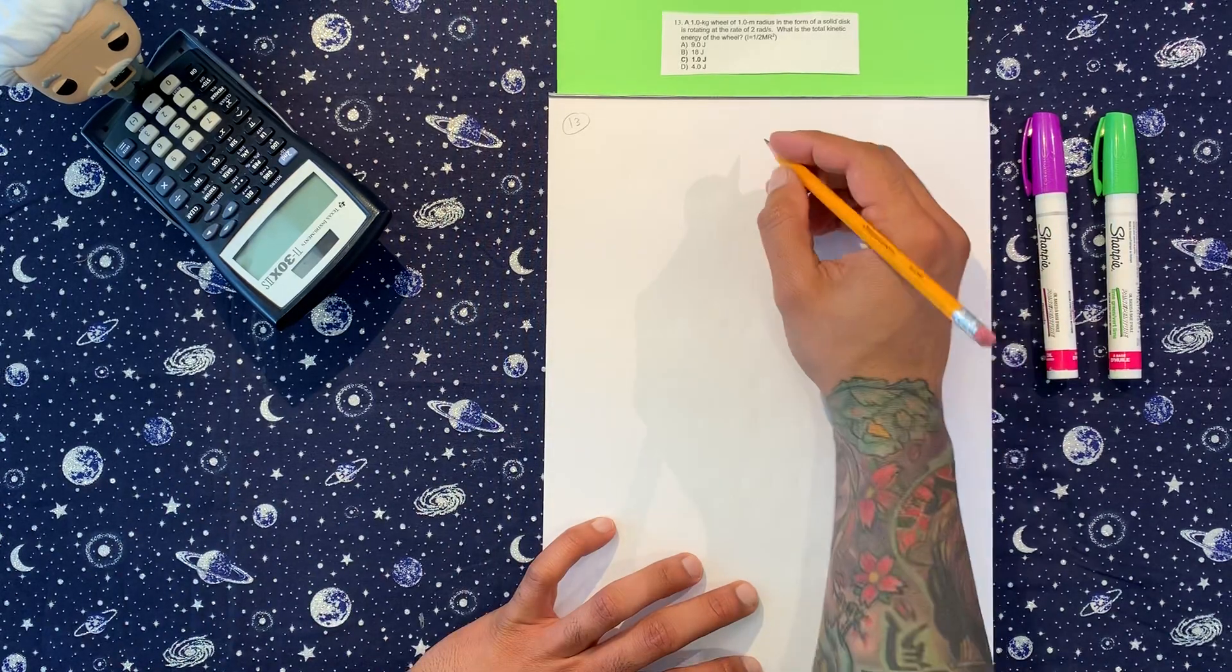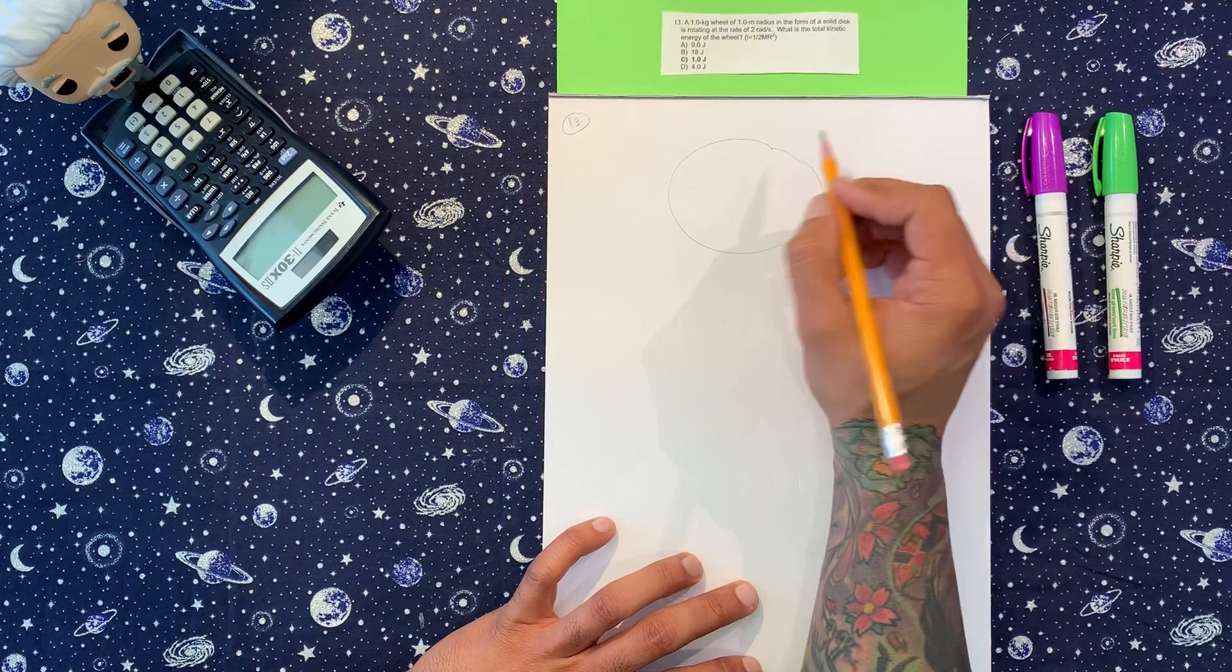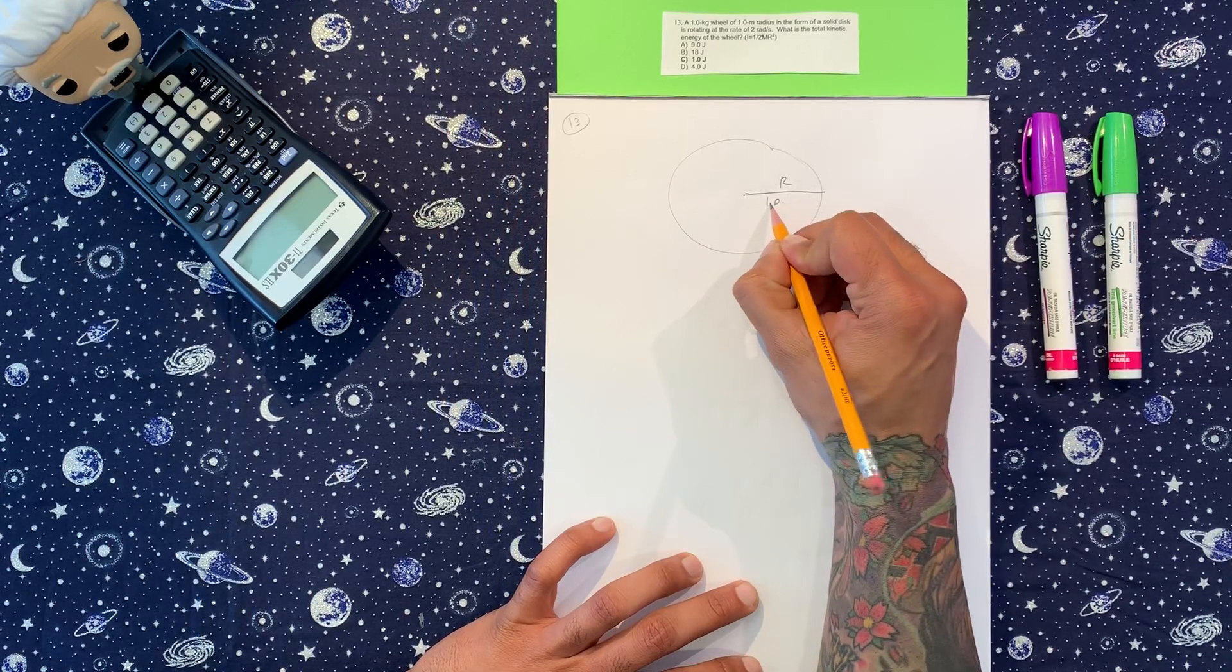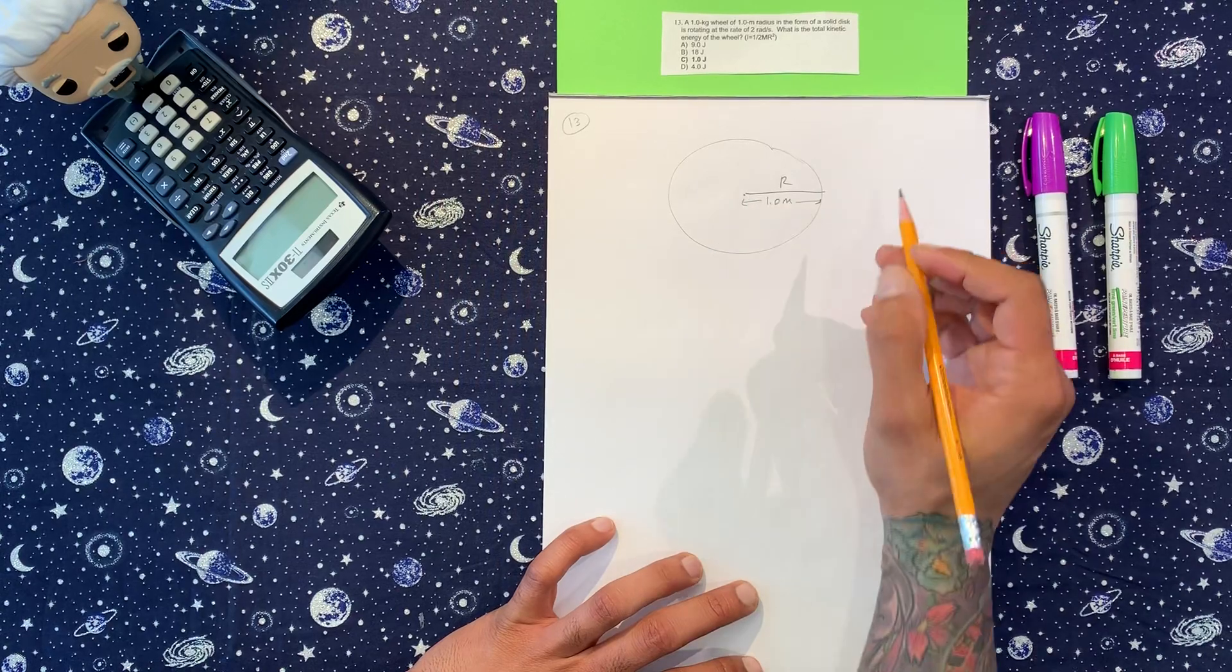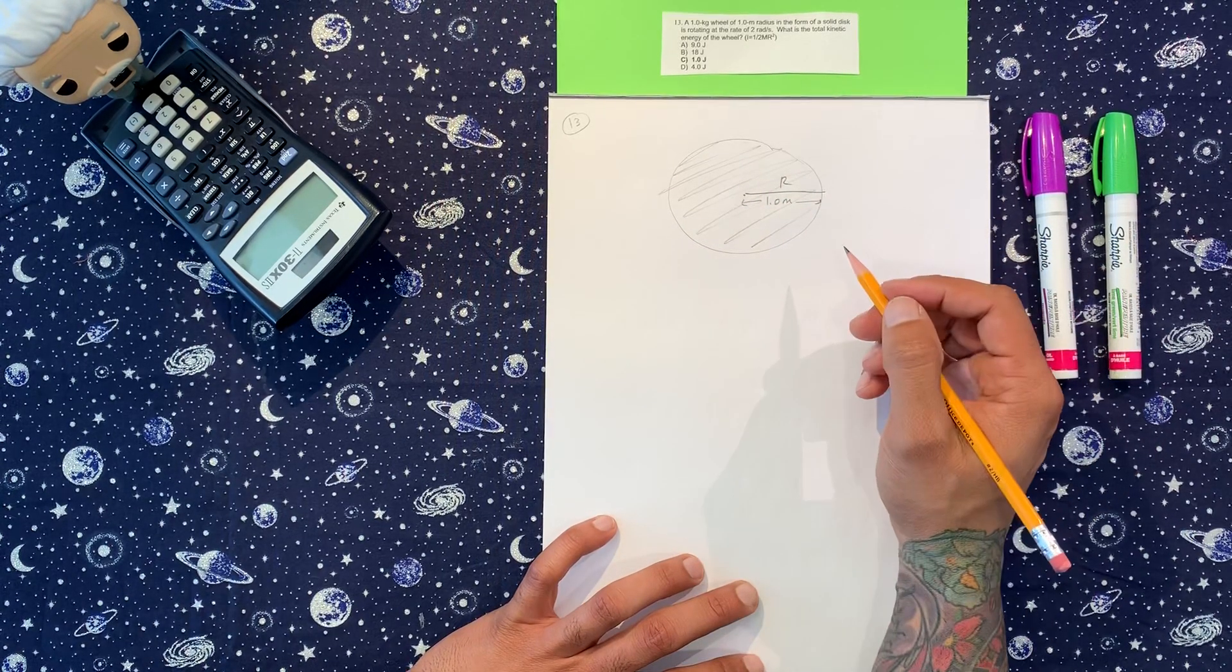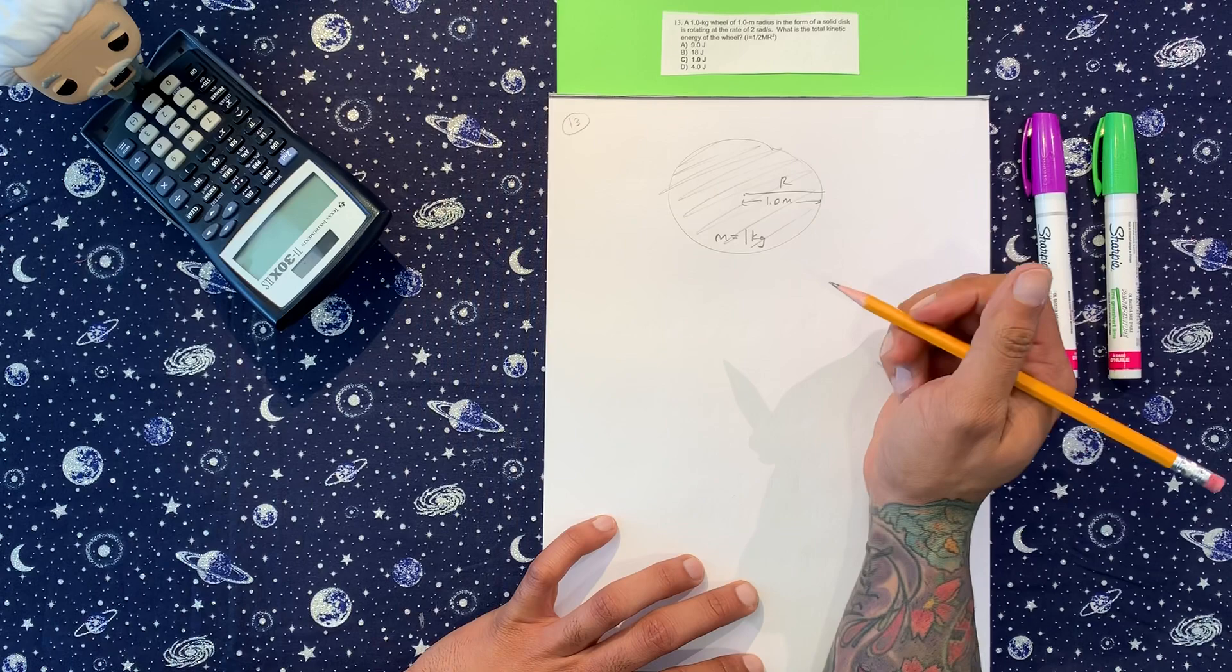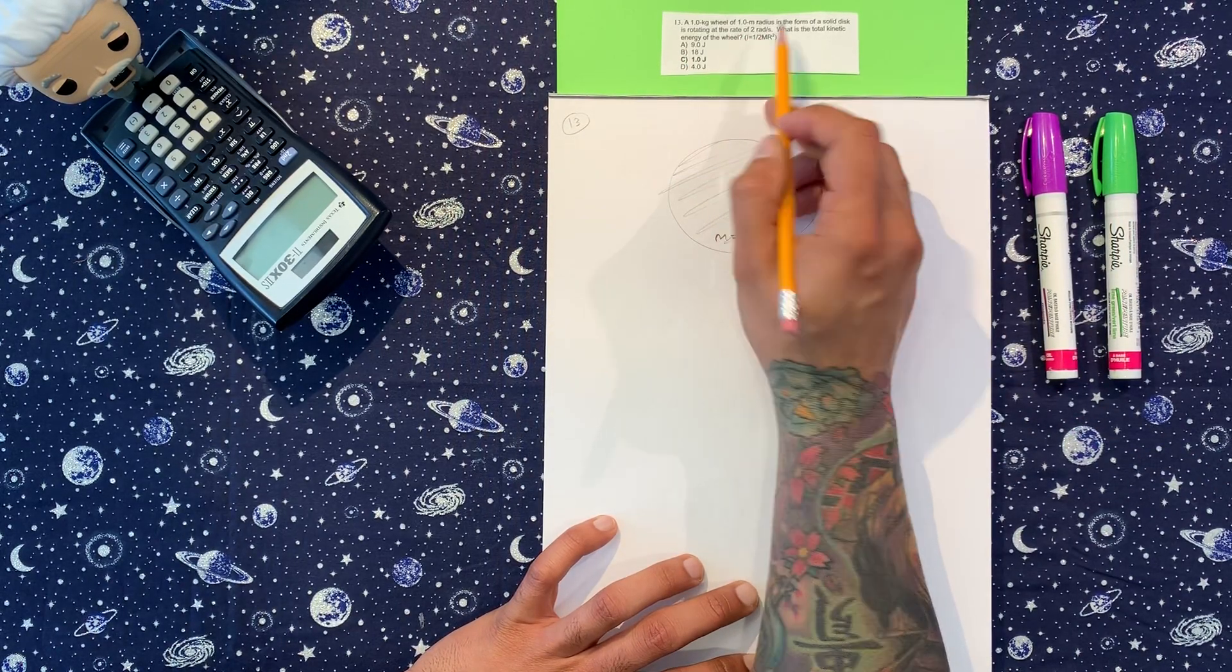So let's draw that out. We got a disc, a solid disc of radius, this is 1.0 meters, boring radius, and it's a solid. This mass is equal to one kilogram, boring mass, and it's rotating at a rate of two radians per second.